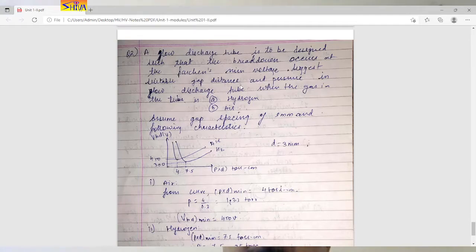A glow discharge tube is to be designed such that the breakdown occurs at the Paustian's minimum voltage. Suggest suitable gap distance and pressure in glow discharge tube when the gas in the tube is number one hydrogen, number two air. You must have seen the glow discharge tube. Glow discharge tube is constructed by using different gases. It may be hydrogen, carbon dioxide, sodium vapor, lime and so on.